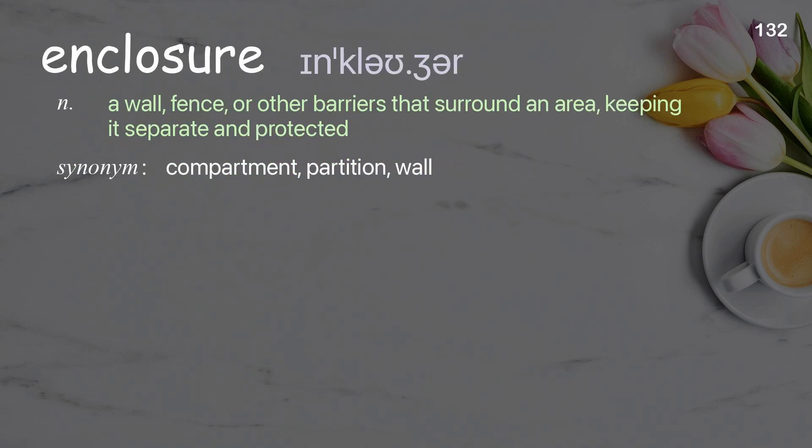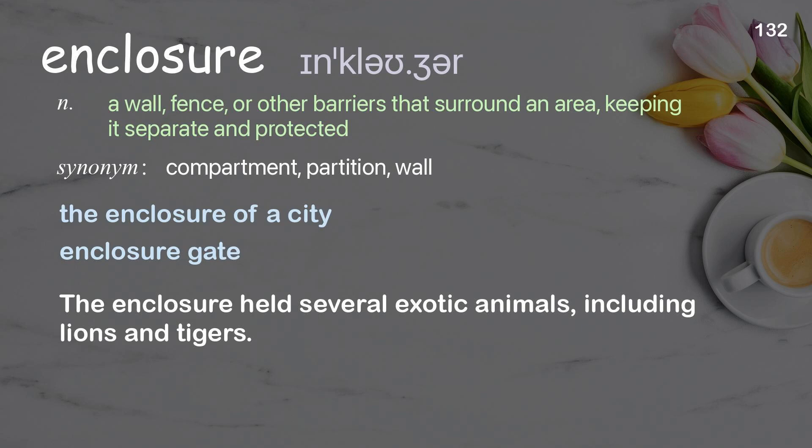Enclosure: a wall, fence, or other barrier that surrounds an area, keeping it separate and protected. Examples: the enclosure of a city, enclosure gate. The enclosure held several exotic animals, including lions and tigers.